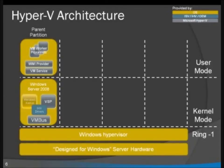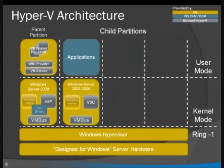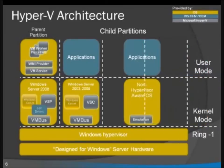Virtual machines are what we call child partitions because they're created on behalf of their parent. Unlike the parent partition, however, these virtual machines don't get direct access to the hardware. They get to use the CPU and the memory — that's all managed by the hypervisor. For the hardware, there are a couple of models.